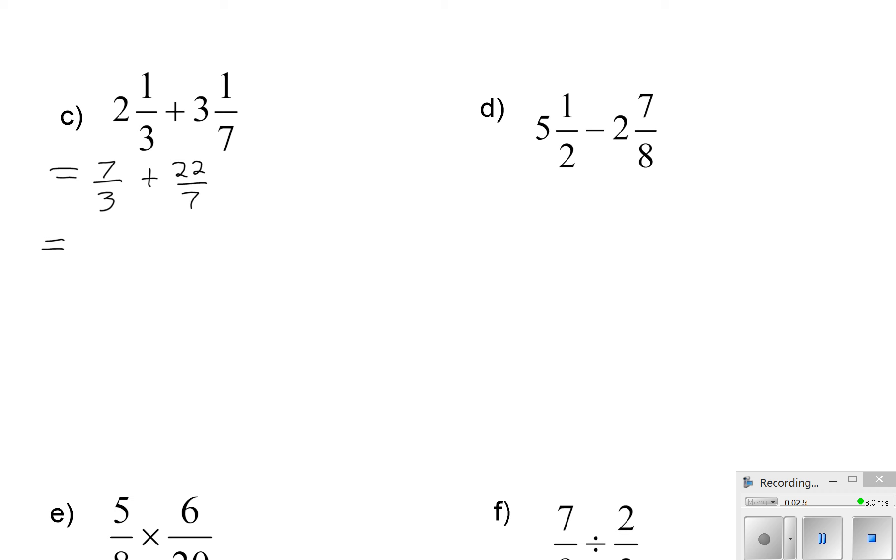Then you can get yourself a common denominator. In this case, it's going to be 21. And so you ask yourself, how did I get 21? Well, 3 times 7 was 21, so 7 times 7 is 49. And 7 times 3 was 21, so 22 times 3 will be 66. And then you add.